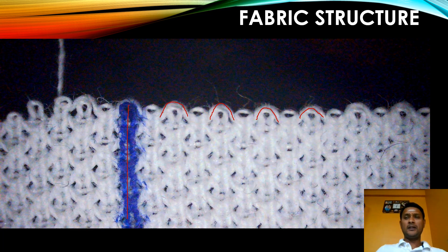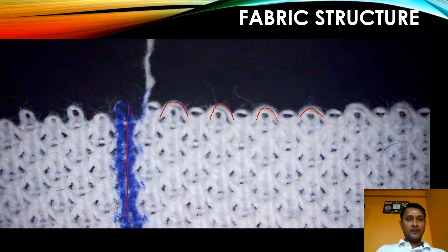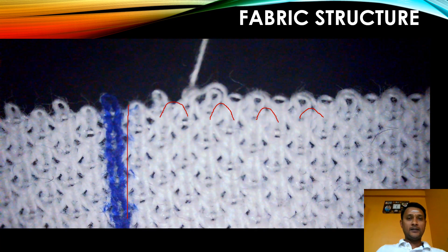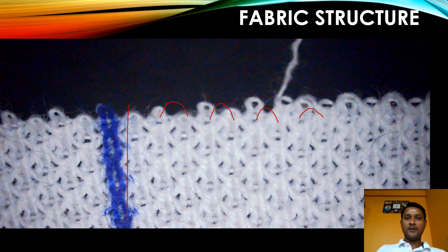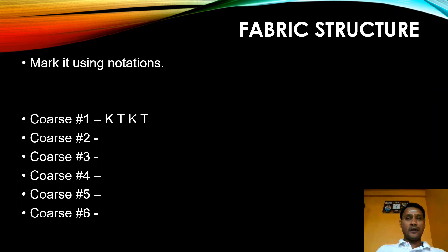While unraveling course number one, we get: knit followed by tuck, knit followed by tuck, knit followed by tuck, knit followed by tuck. After that vertical line, I could identify course number one as knit-tuck-knit-tuck. Using the same notations followed in our previous videos, course number one is notated as knit-tuck-knit-tuck. Now we are going to unravel course number two.